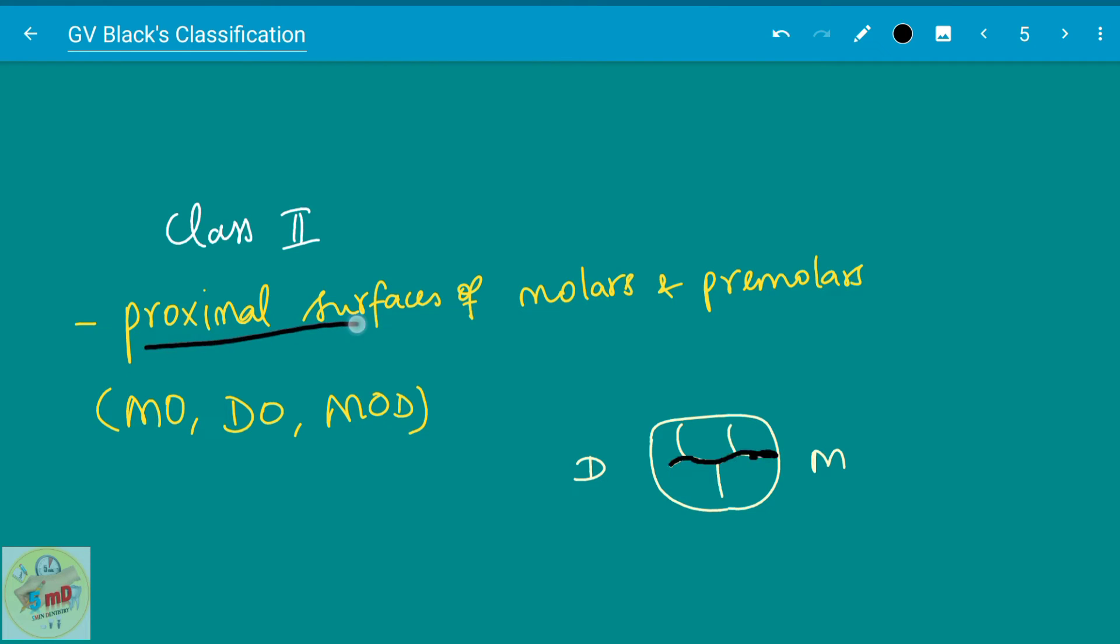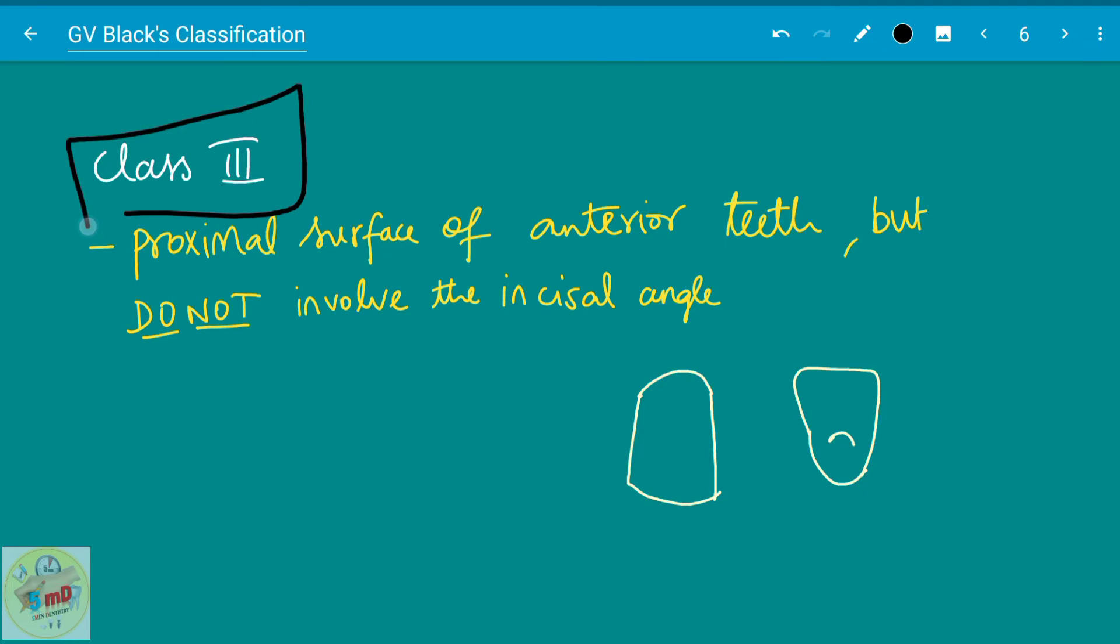Moving on to class two: proximal surfaces of the molar and premolar, that is the posterior teeth, are involved in class two. When there is mesial and occlusal involvement it is mesiocclusal. When there is distal and occlusal involvement it is disto-occlusal. When there is both mesio-occlusal and distal involvement it is called as MOD.